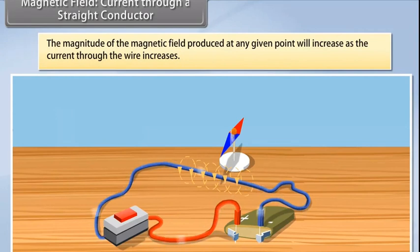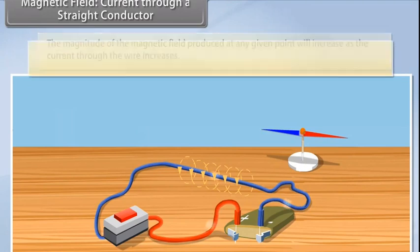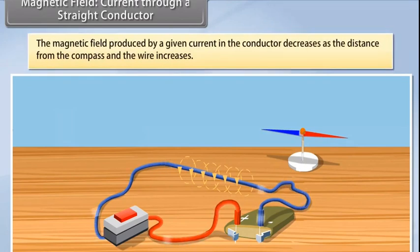Now, try moving the compass away from the current passing through the wire. You will see that the magnetic field produced by a given current in the conductor decreases as the distance from the compass and the wire increases.